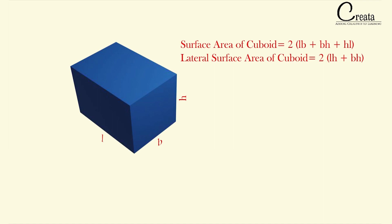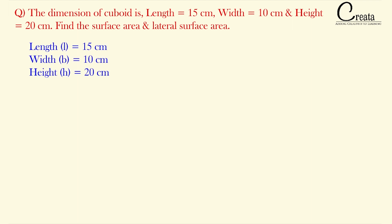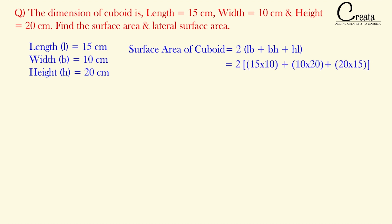Let's take a small question. The dimensions of the cuboid are: length = 15 cm, width = 10 cm, height = 20 cm. Find the surface area and the lateral surface area. All three dimensions are given. Using the formula for surface area of the cuboid — 2(LB + BH + HL) — putting the values, we get the surface area as 1300 cm².